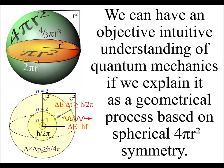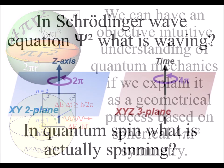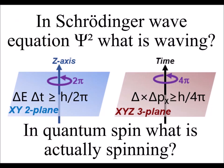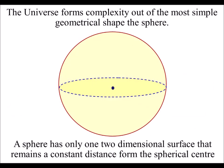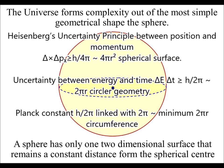In quantum mechanics, 2 pi and 4 pi represent the limit or boundary condition for a process of mathematical rotation or quantum spin. But what is spinning in quantum mechanics? It seems to be probability and uncertainty — this is like asking what is waving in the wave equation. I believe we can have an objective, intuitive understanding of quantum mechanics if we explain it as a geometrical process based on 4 pi and 2 pi.